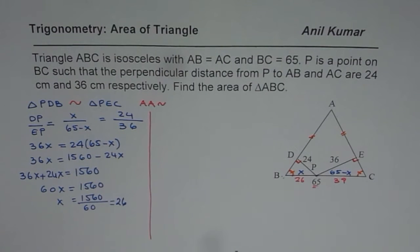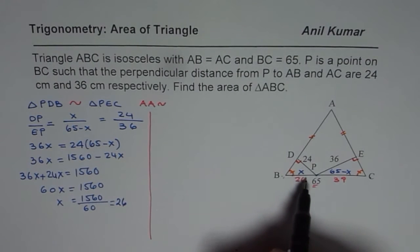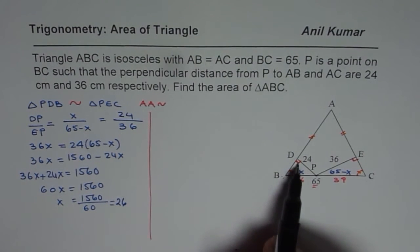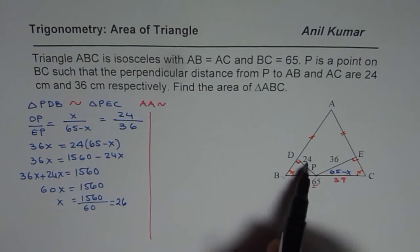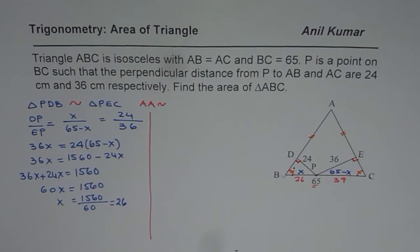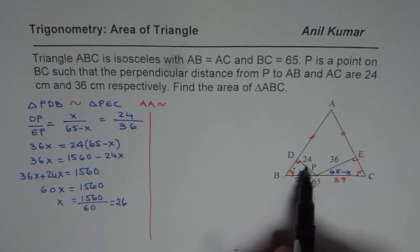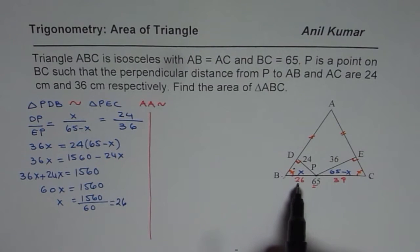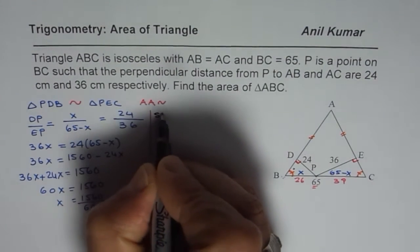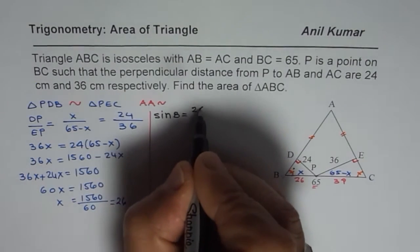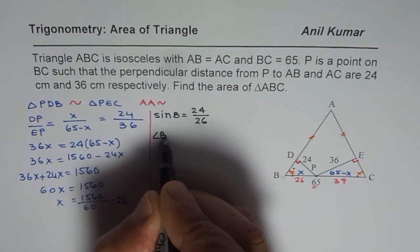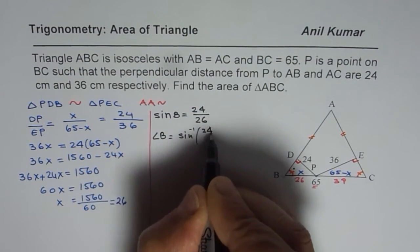Now how does that help? It helps us find the angle. If we consider the small right triangle at B, we know BP is 26 and DP is 24. With reference to angle B, the opposite side is 24 and the hypotenuse is 26. So we use sine: sine B equals 24 over 26, and angle B equals sine inverse of 24 over 26.